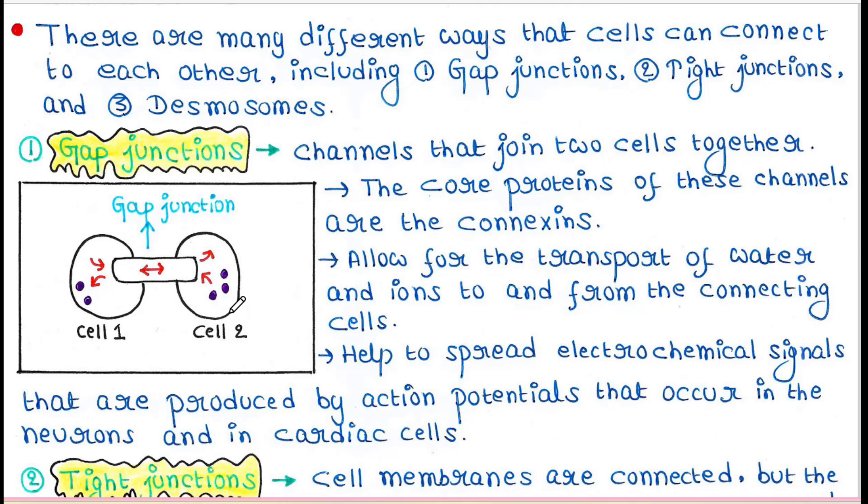The cytoplasm of these two cells are actually connected, and water and ions are transported from cell 1 to cell 2 and vice versa, from cell 2 to cell 1.